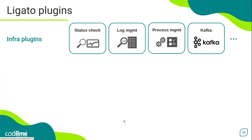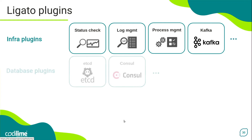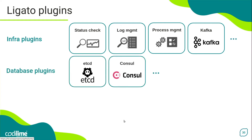Process Manager, in turn, allows you to create processes through which you can manage and monitor other plugins. You can also use a Kafka plugin, which is an adapter to the Kafka message bus. For communication with an external ETCD key-value data store, there is an appropriate plugin. Similarly, the console plugin acts as a key-value data store adapter for the console.